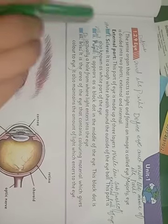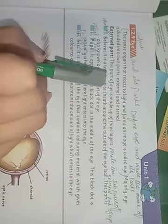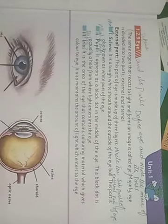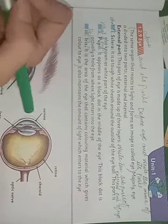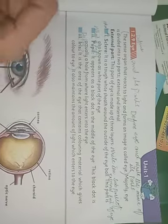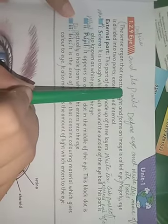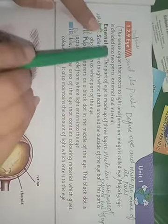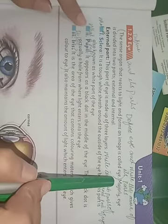Now come to the topic of the eye. The first question from the eye is: Define the eye and its parts. What is the eye? The eye is a sense organ that reacts to light and forms an image. It consists of two parts: external part and internal part.